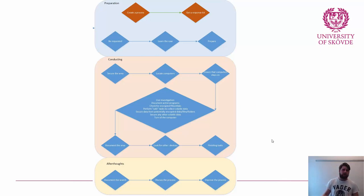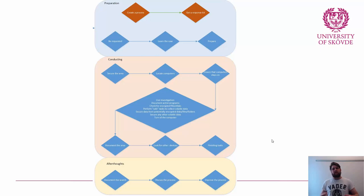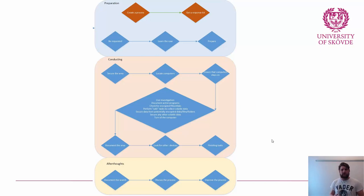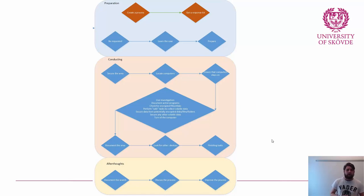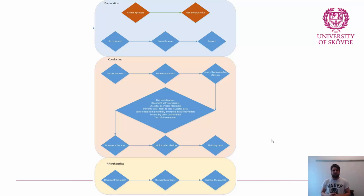Next, perform safe tasks to collect volatile data — collecting data in ways that from experience will not crash the computer. One such method is collecting registry hives and RAM memory using FTK Imager. I've used FTK Imager hundreds of times myself and never crashed a computer, and never heard of anyone crashing a computer when harvesting memory with it. So that is considered safe.